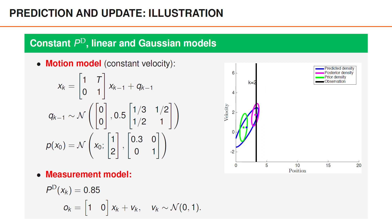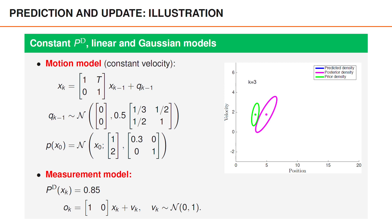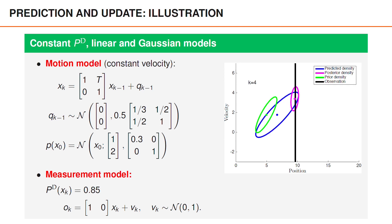At later times, the green curve instead represents the posterior at time k-1, with a similar relation between densities. At time k-3, the relations are different since the object happens to be undetected. In this case, the predicted density is not visible since it is identical to the posterior density. The posterior uncertainties at time k-3 are larger than at time k-2, and they would continue to increase if the object remains undetected. However, at time k-4, the object is again detected and the posterior uncertainties therefore decrease again.